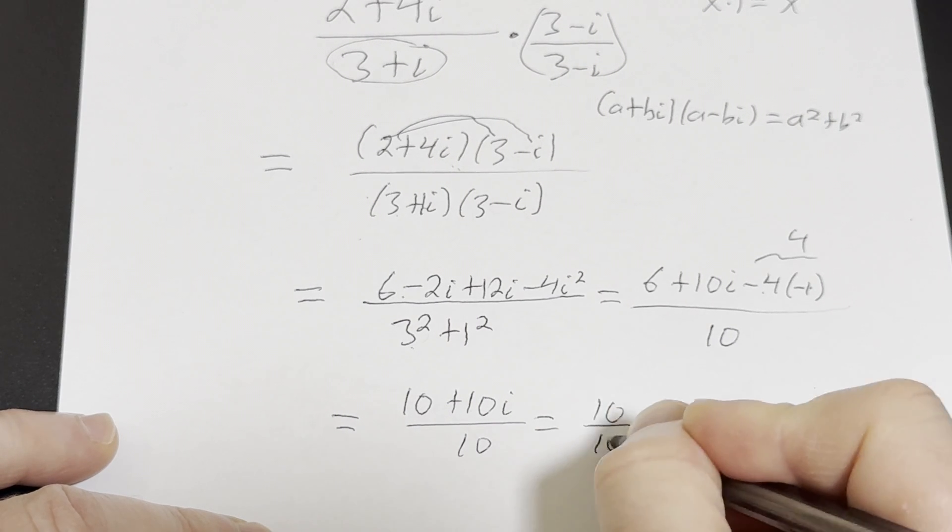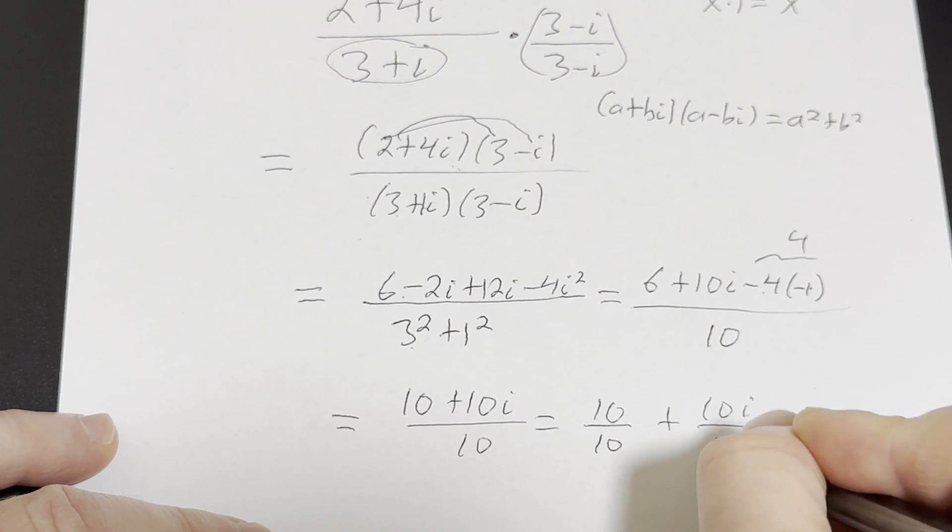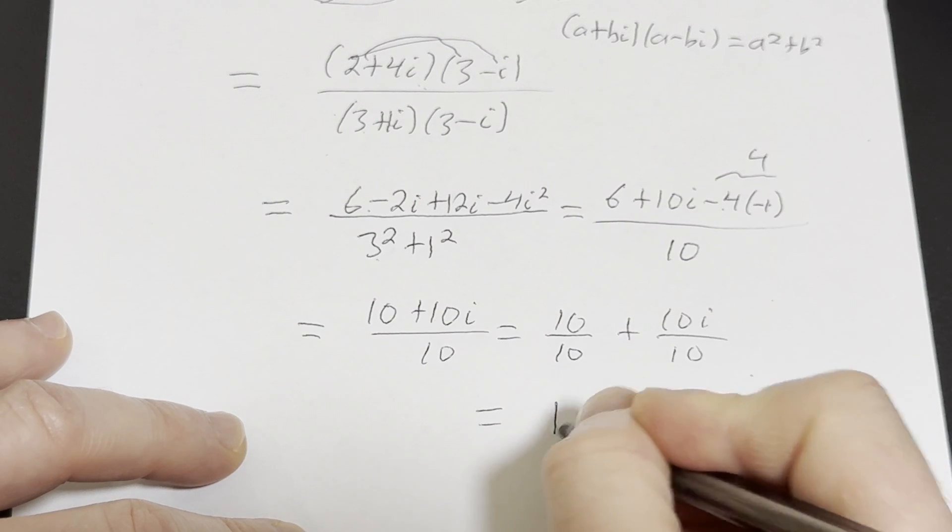You can break this up as 10 over 10 plus 10i over 10. This is equal to 1 plus i.